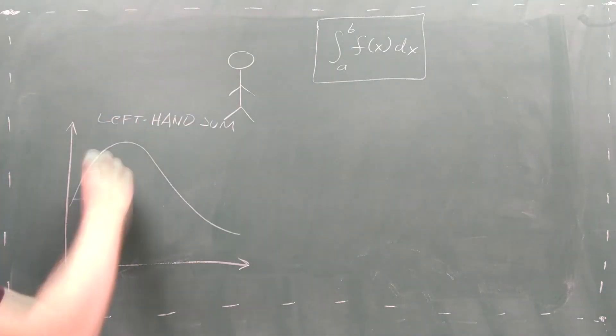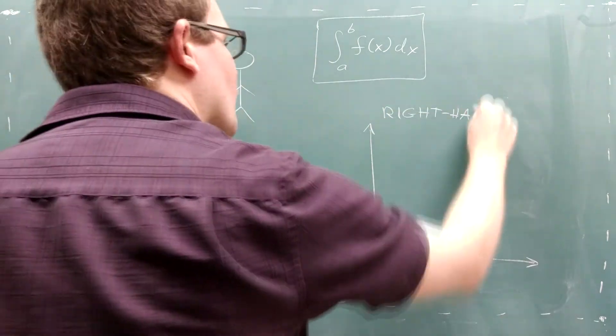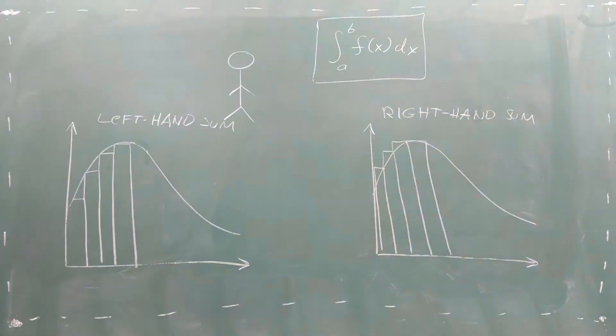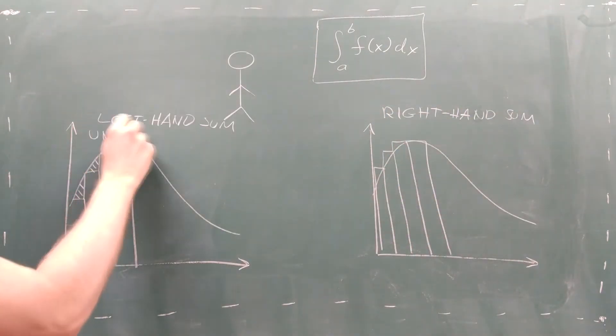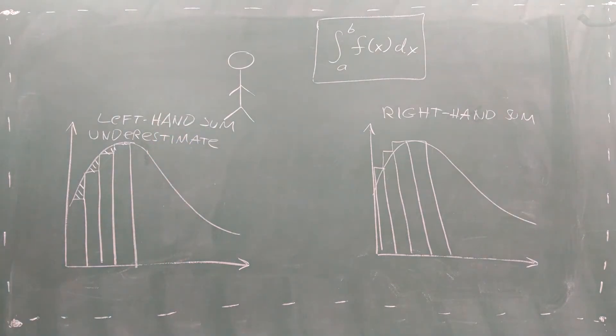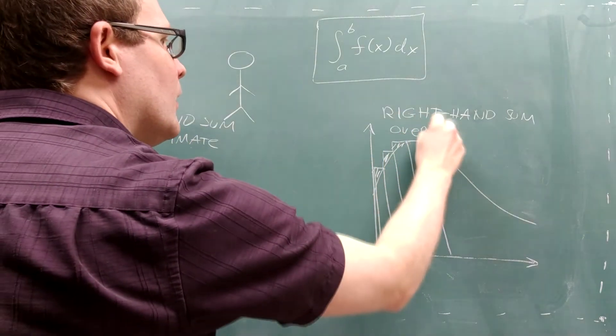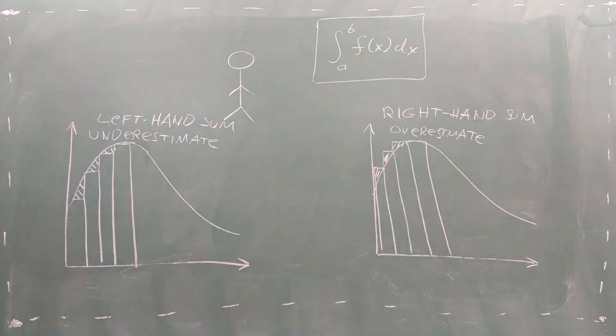When you're setting up an integral calculation, the left-hand sum and the right-hand sum are good places to start. However, if your function is increasing, the left-hand sum will underestimate the integral, and the right-hand sum will overestimate the integral.